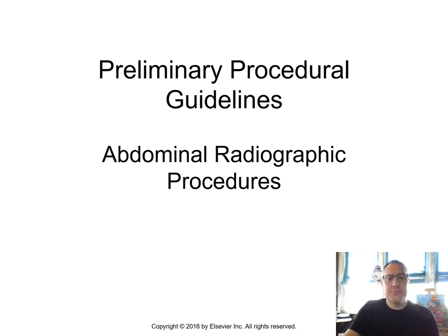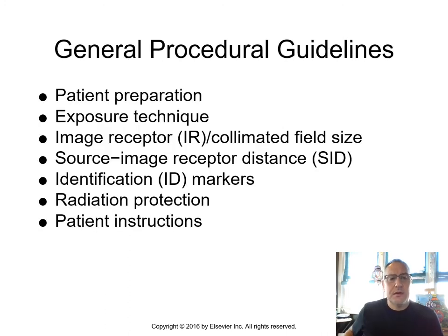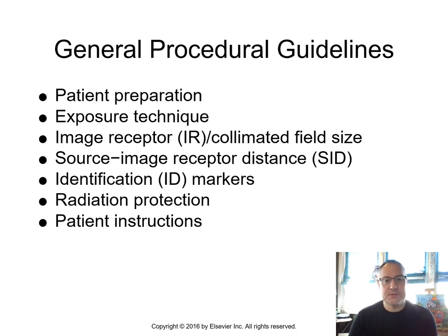Let's talk about some preliminary procedural guidelines. These include patient preparation, exposure technique, image receptor size or collimated field size, source-to-image receptor distance, identification markers and how to properly use them, radiation protection, and patient instructions.